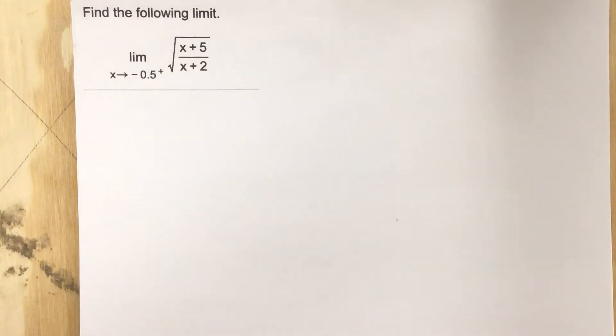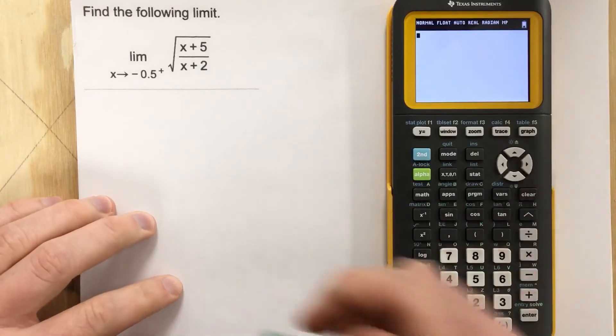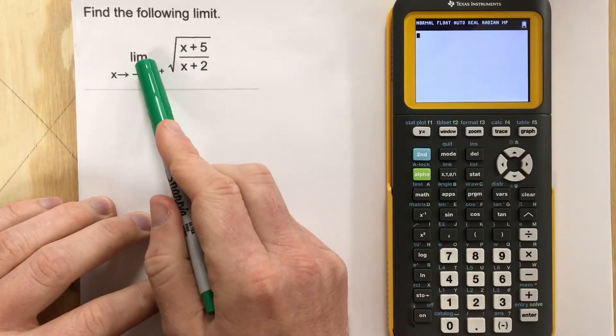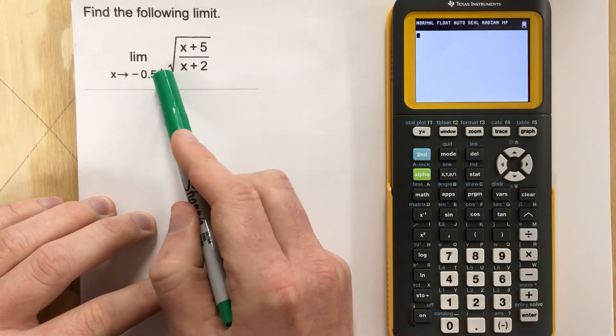This is problem number four from section 2.4. In this problem, they say find the following limit, and they want us to find the limit as x approaches negative 0.5 from the right.